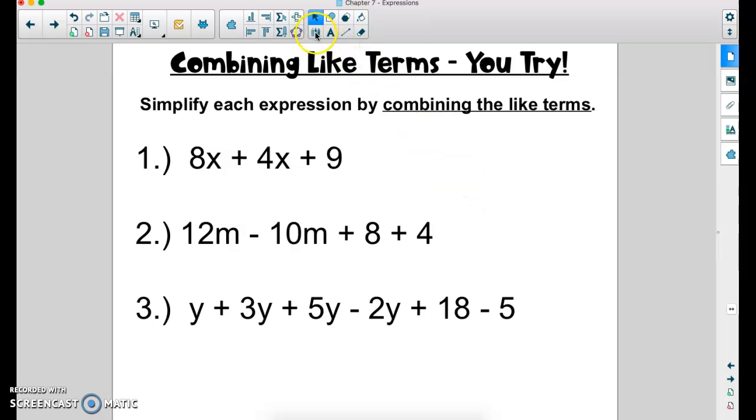Okay, so now that you've done these problems in your notebook, let's go over them together. Number one, I see an 8x plus a 4x. So if I simplify this expression, 8 plus 4 is 12. 12x. But I can't add the 9 with it because 9 doesn't have an x. So this is our answer. 12x plus 9.